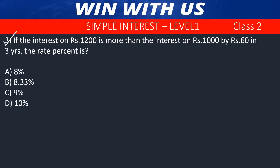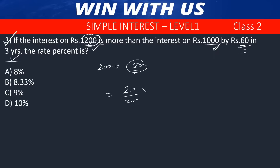Question number 3. If the interest on a sum is more than the interest on 1,000 by 60 rupees in 3 years — 60 rupees is the difference in 3 years. The rate of interest is 20 divided by 200 into 100 percent. The answer is 10 percent.